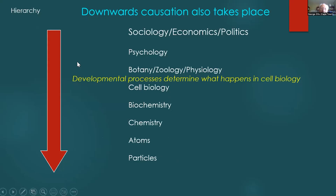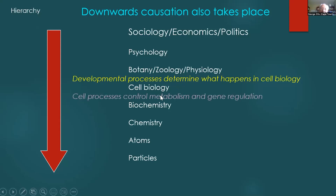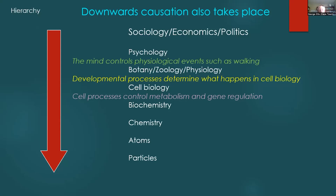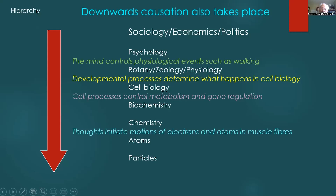Developmental processes determine what happens in cell biology. You get different kinds of cells — skin, hair, blood, neurons — and which cell occurs where is determined downwardly by its position in the organism through developmental processes. Cell processes control metabolism and gene regulation according to higher-level needs. The mind controls physiological events such as walking: I decide to go walking, signals travel down to my muscles and electrons in my muscle fibers. Thoughts initiate motions of electrons and atoms in muscle fibers — so downward causation is taking place.